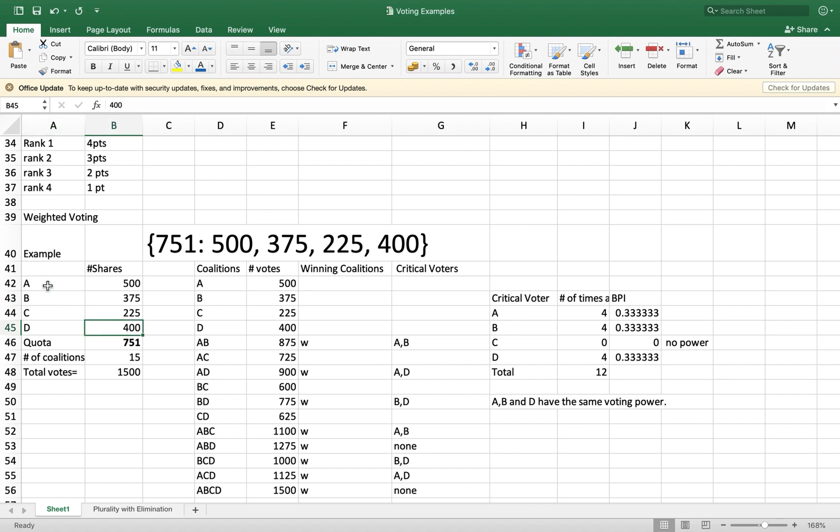We have four candidates with shares. The quota is 50% of the total. The total vote is 1500, so 0.5 times 1500 plus one is 751. This is based on the majority system. Now if we have four candidates, that will be 2^4 = 16, minus one, so the total number of coalitions that you can form is 15.